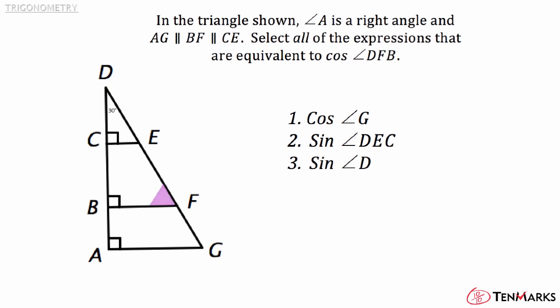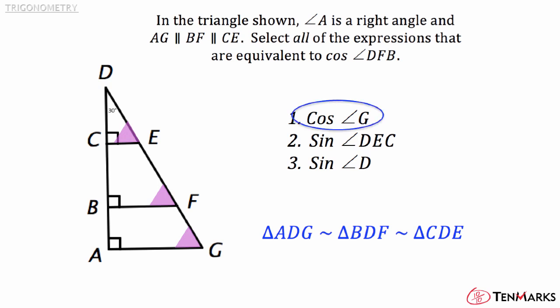What do you know about overlapping triangles when a line is drawn parallel to the sides of the triangle? The triangles are similar, so all three triangles in this diagram are similar. Similar triangles have congruent corresponding angles, so angle G and angle DEC are both congruent to angle EFB. So the cosine of angle G has to be equivalent to the cosine of angle DFB because the angles are congruent.